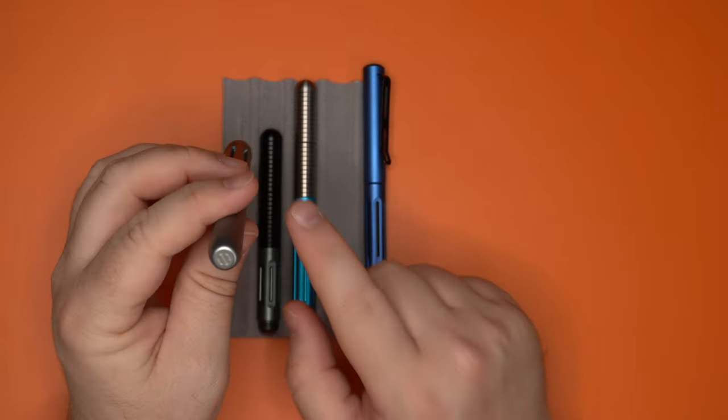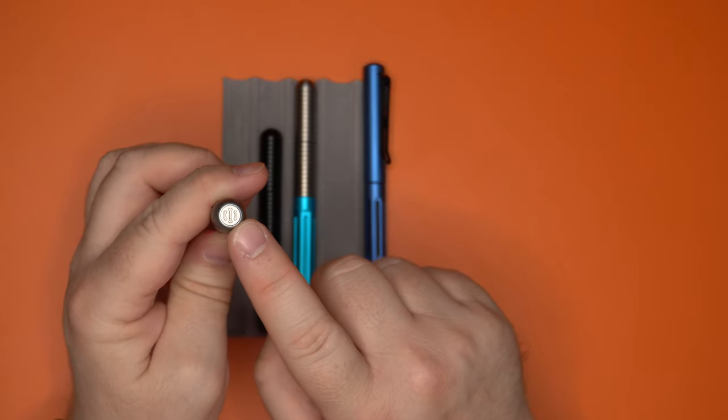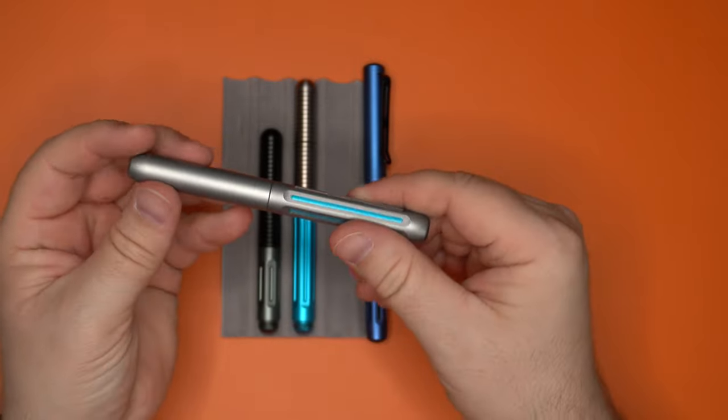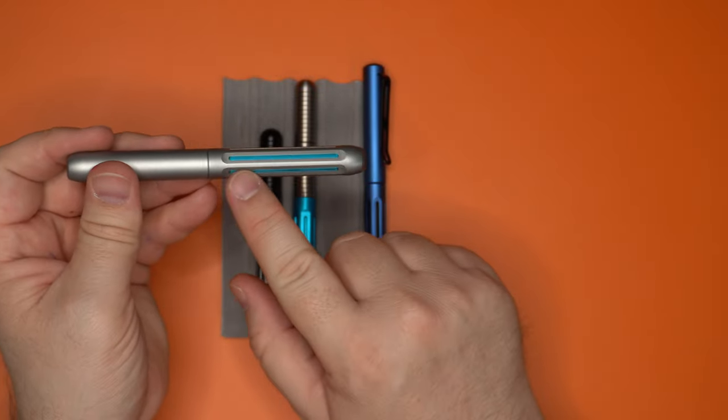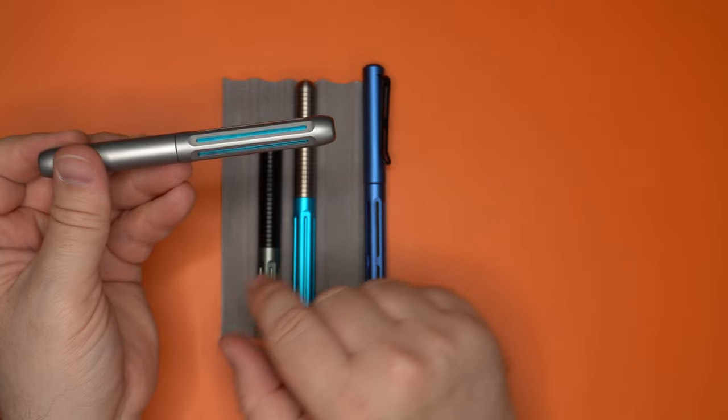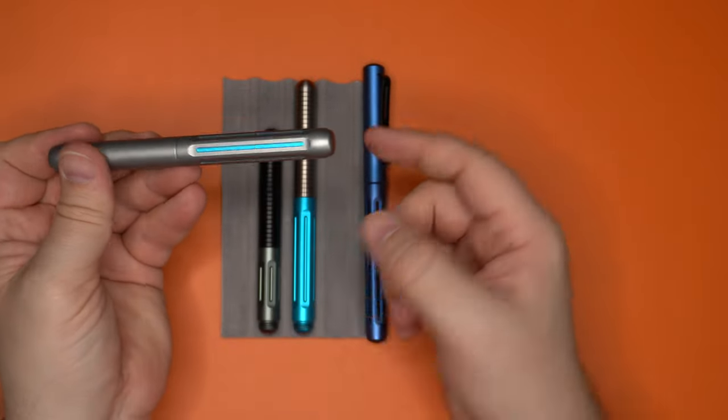The cool thing about the Icon is you have this nice engraved finial up here with the Icon logo. You have these really smooth-looking lines here on the body and the cap, and then you have these cutaways in here, which will show the interior sleeve of the pen.